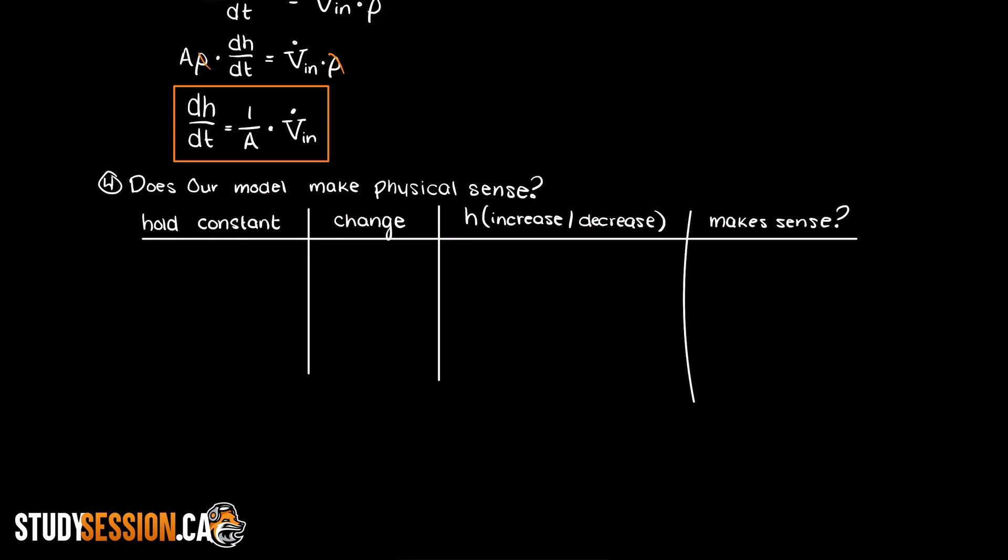So let's hold the volumetric flow rate constant and decrease the area, while decreasing the area of our bucket will cause the height to rise which makes sense. If we were to increase the area then the height would decrease which also makes sense. Now let's try the other one, let's hold the area constant and alter the volumetric flow rate in. The volumetric flow rate into the system increased then the height would also increase and same for vice versa. Therefore, we can say that this ODE makes physical sense.